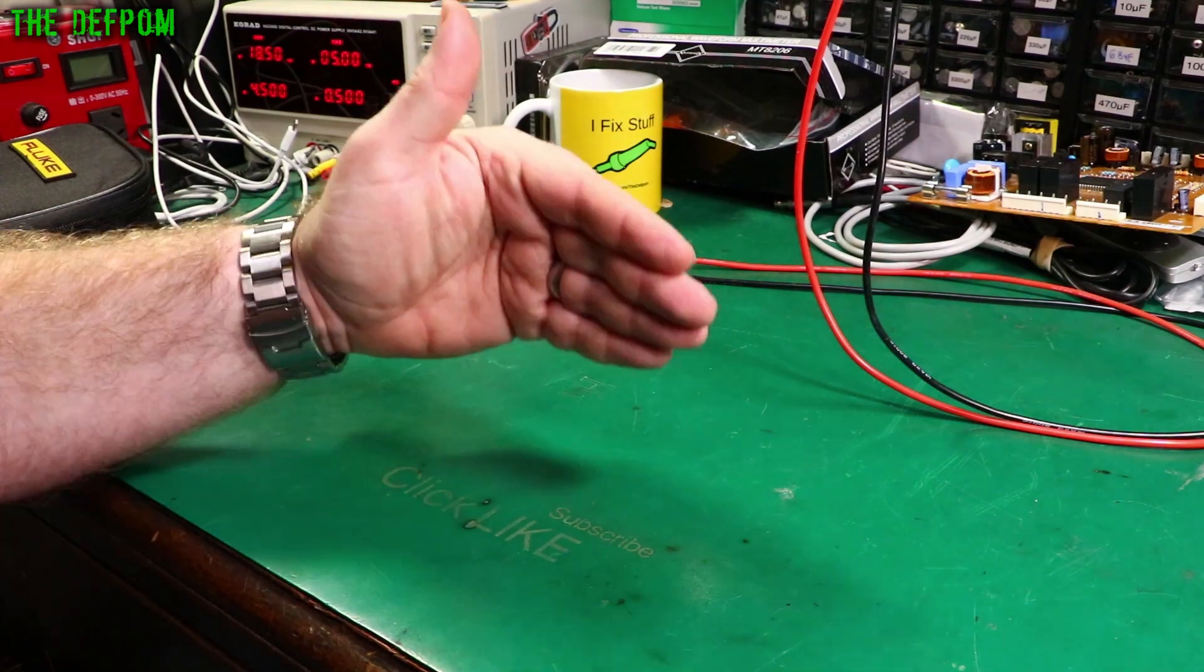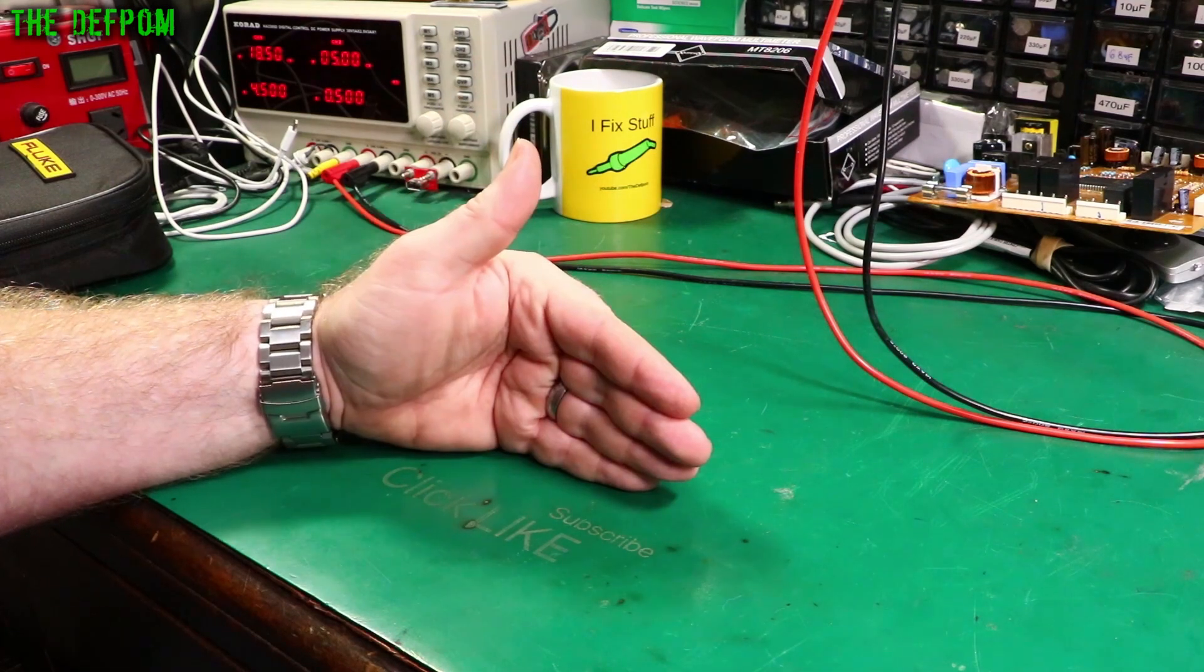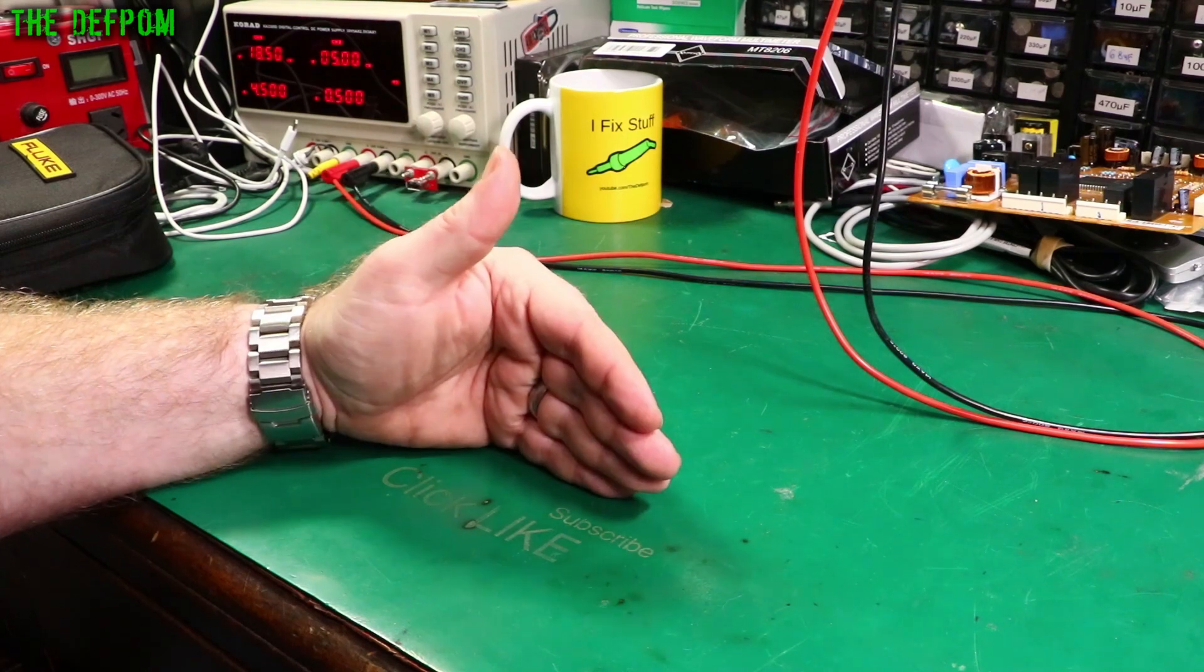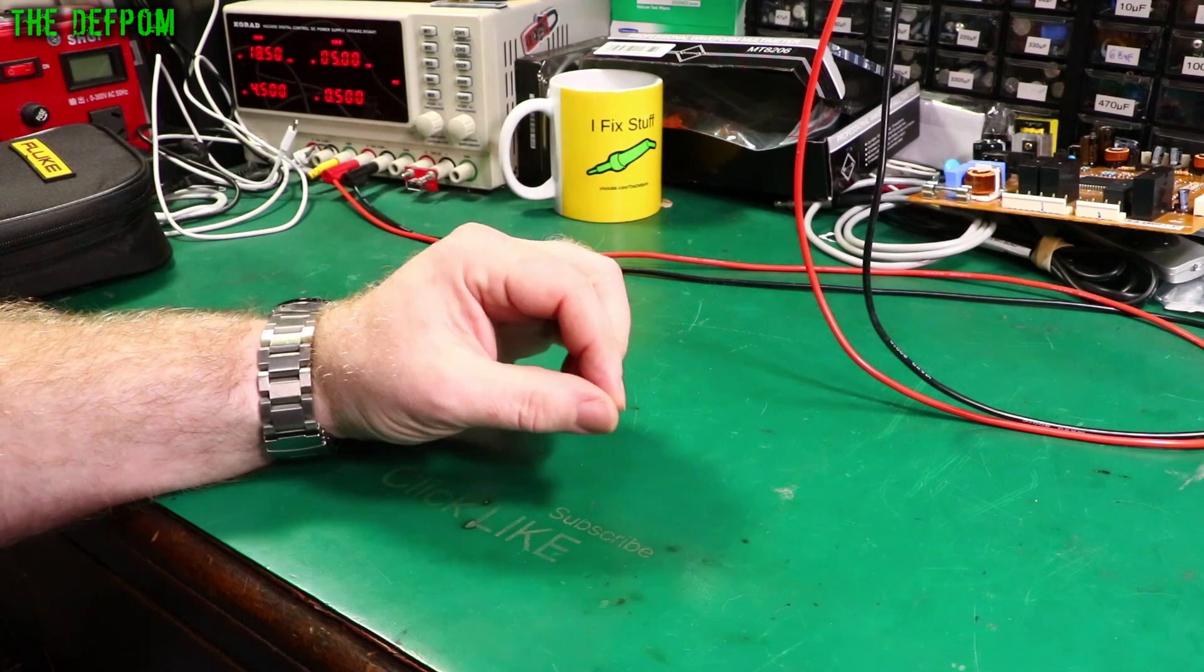I can probably even demonstrate that, actually. He had these buck converters, and when he hooked them up to his power supply, which is rated at 5 amps, they blew up. And he was getting comments saying that it blew up because his power supply is too powerful. Well, that's not right.